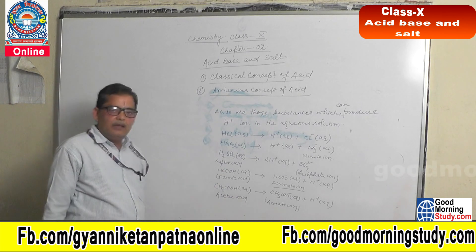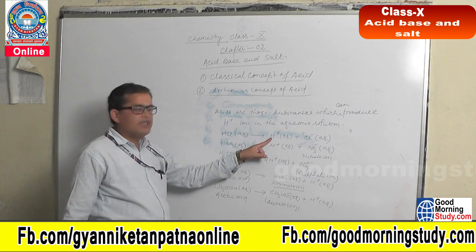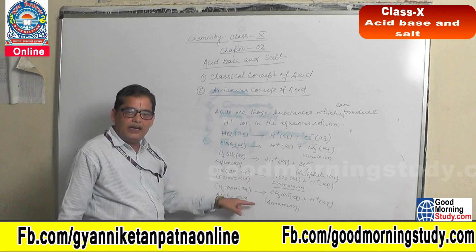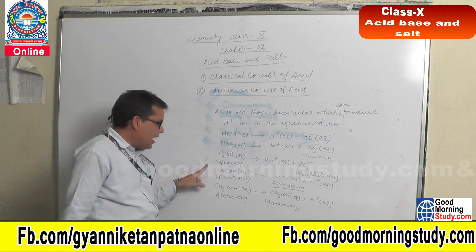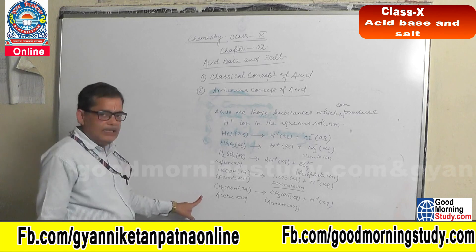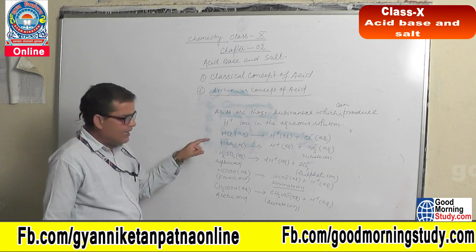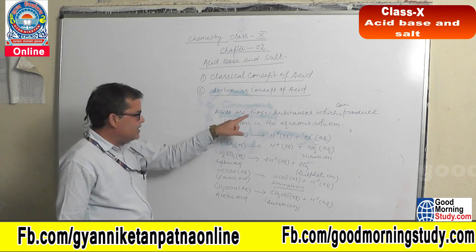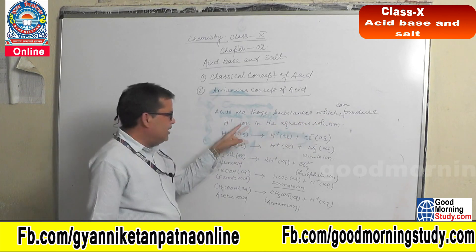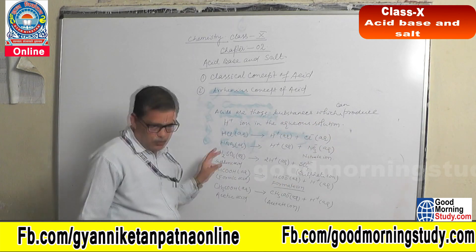You are observing that all these acids are producing H+ ions in the aqueous solution — that is why they are called acids. So this is the Arrhenius concept of acid: acids are those substances which can produce H+ ions in the aqueous solution.